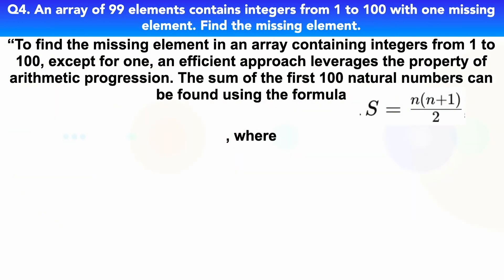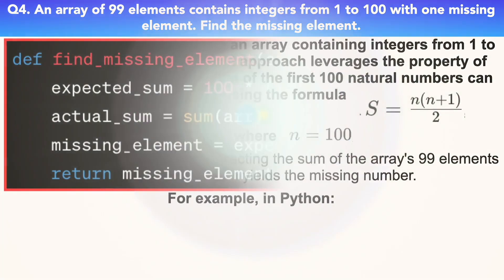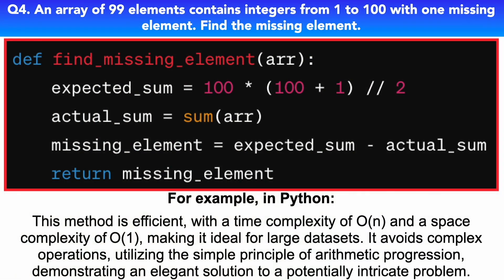Subtracting the sum of the array's 99 elements from this expected sum yields the missing number. For example, in Python, here is some Python code you could demonstrate if your interview is an assessment where you're required to type sample code. This method is efficient with a time complexity of O(N) and a space complexity of O(1), making it ideal for large datasets. It avoids complex operations, utilizing the simple principle of arithmetic progression — an elegant solution to a potentially intricate problem.